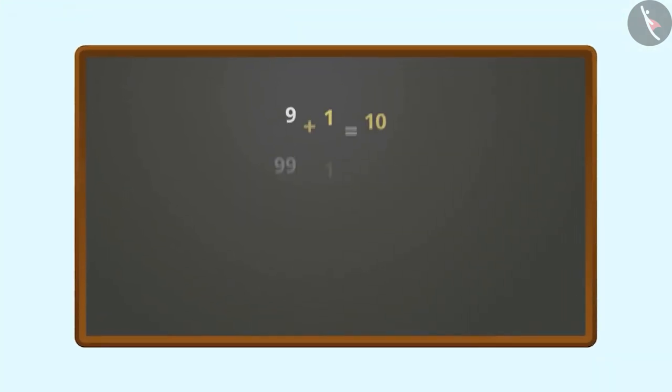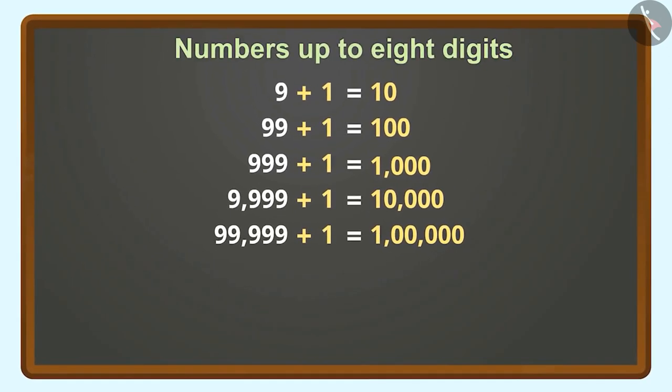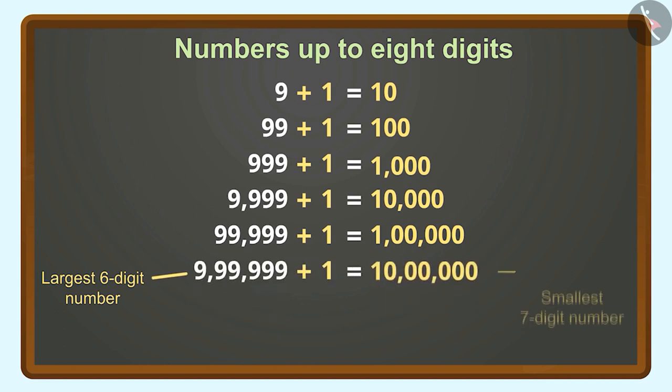While learning six-digit numbers, we had created an interesting pattern. Now let's start learning even larger numbers by extending this pattern. If we add one to the largest number of six digits, then we will get the smallest seven-digit number, that is 10 lakh.